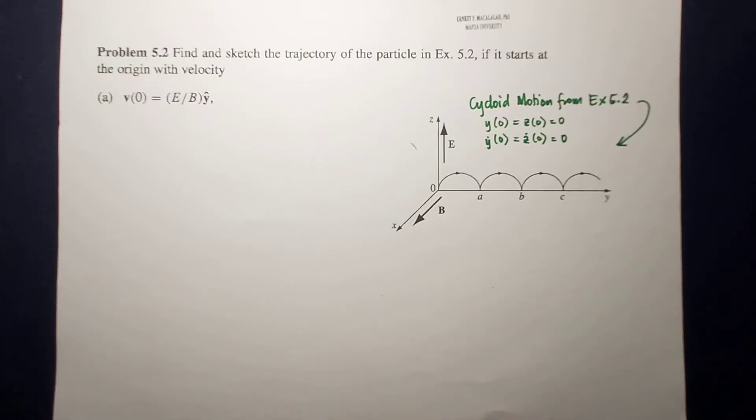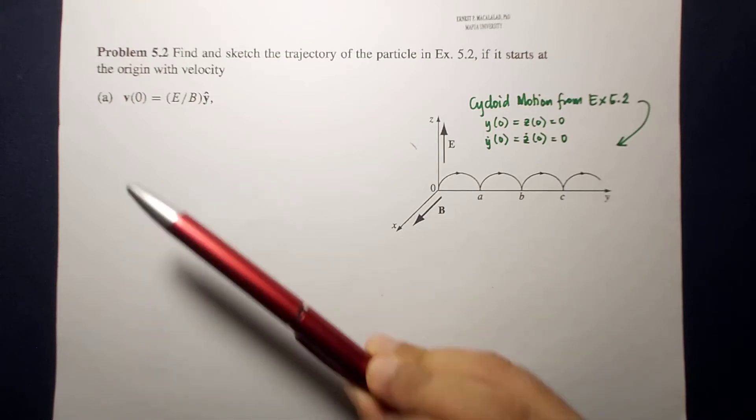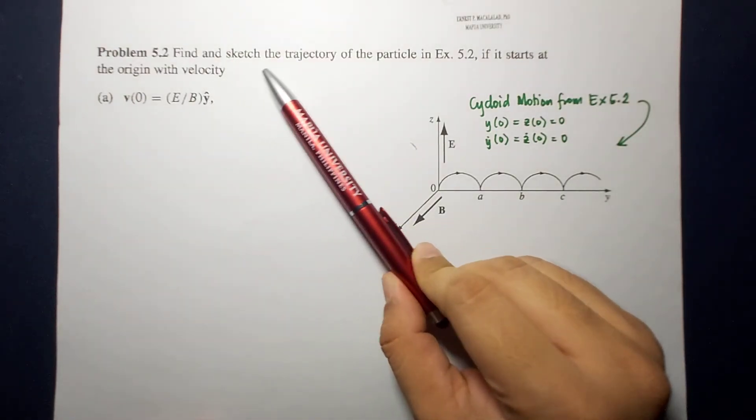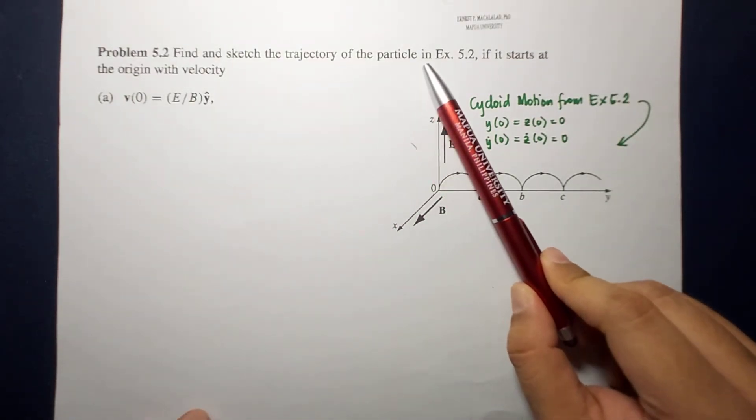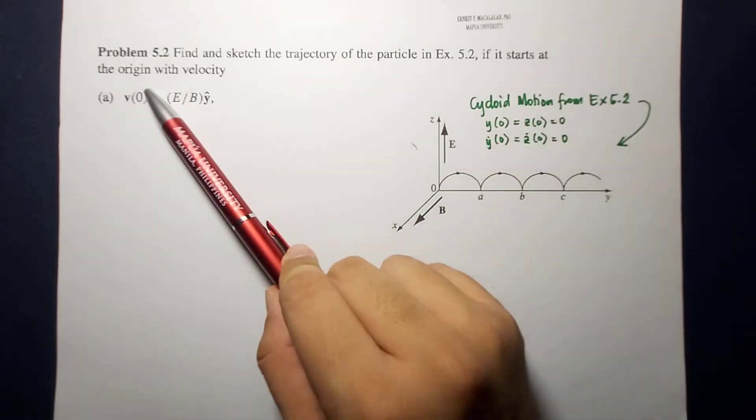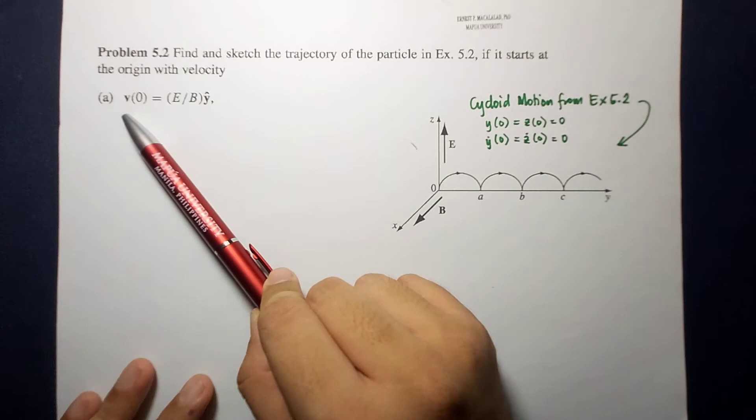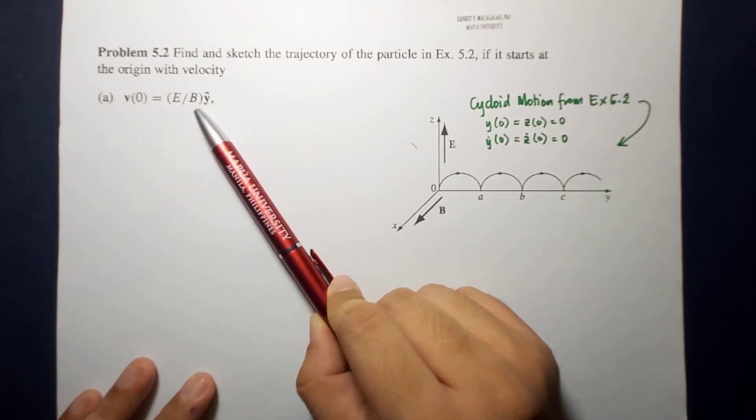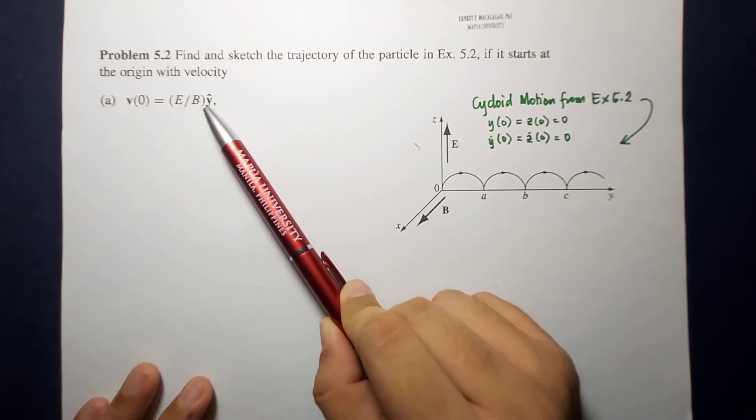What's up guys! It's me, Sir Ernest, and today we will solve a problem involving magnetostatics. The problem reads, find and sketch the trajectory of the particle in example 5.2 if it starts at the origin with velocity (a) e over b y hat.